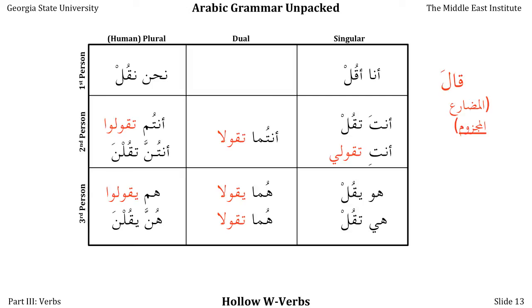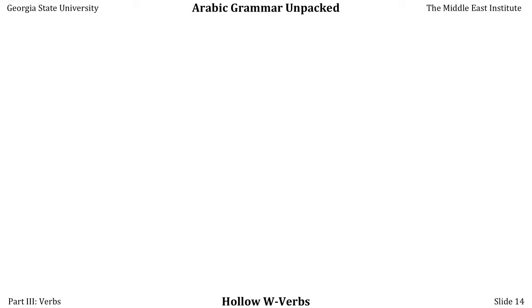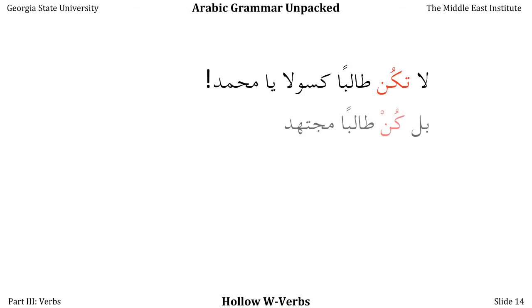Remember that this particular rule only applies in the MUDARIT MAJZUM — the JASIV or third form of the present tense. In the first and second forms of the present tense it really doesn't apply at all. We can also look at commands, which are always in the MUDARIT MAJZUM. I can say: لا تكن طالباً كسولاً يا محمد — 'Don't be a lazy student, Muhammad.' In this case, the verb KANA has a vowel as one of its root letters, we're in the MUDARIT MAJZUM, and we don't have a long vowel suffix, so the WAW becomes a DHAMMA — لا تكن.